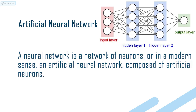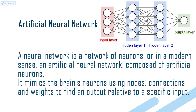A neural network is a network of neurons, or in a modern sense, an artificial neural network composed of artificial neurons. It mimics the brain's neurons using nodes, connections, and weights to find an output relative to a specific input.